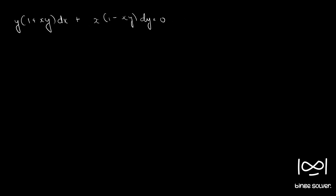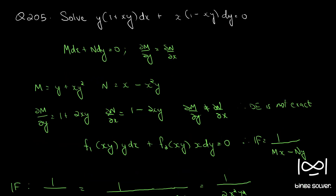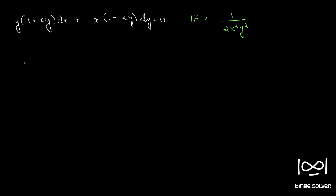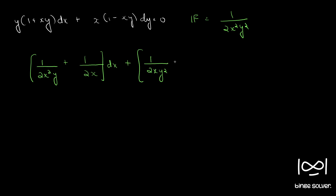Our integrating factor is 1/(2x²y²). Multiplying throughout, we get: [y/(2x²y²) + 1/(2xy²)]dx + [x/(2x²y²) - 1/(2x²y)]dy = 0, which simplifies to [1/(2xy²) + 1/(2x)]dx + [1/(2xy) - 1/(2y)]dy = 0. This is our new M and N.